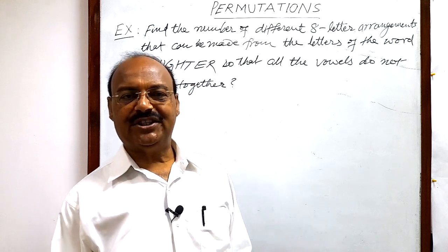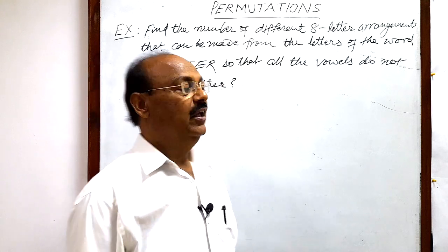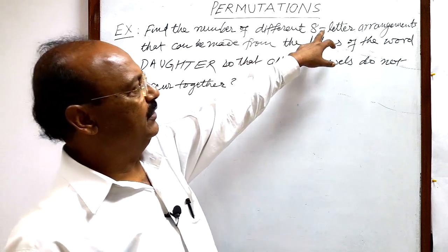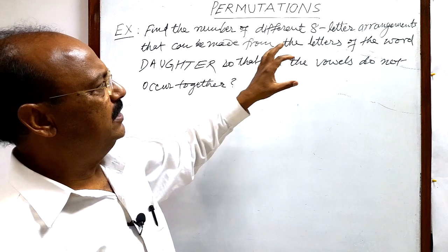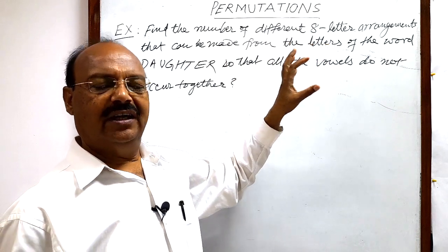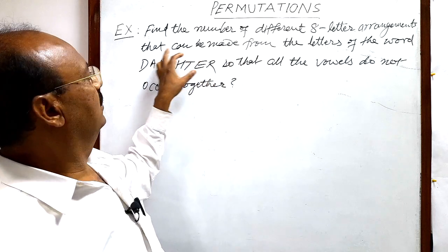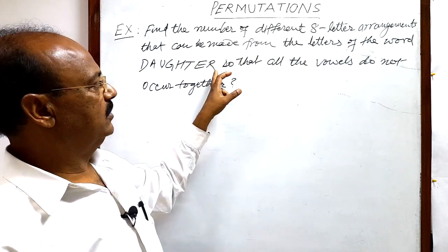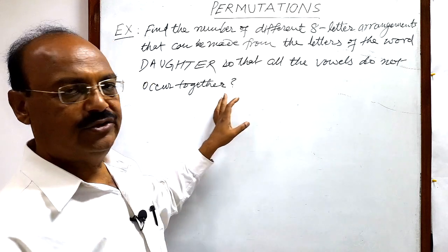Welcome students. Let us see a very interesting question from the topic of permutations. The question is: find the number of different 8-letter arrangements — meaning 8-letter words — that can be made from the letters of the word 'daughter', such that all the vowels do not occur together.